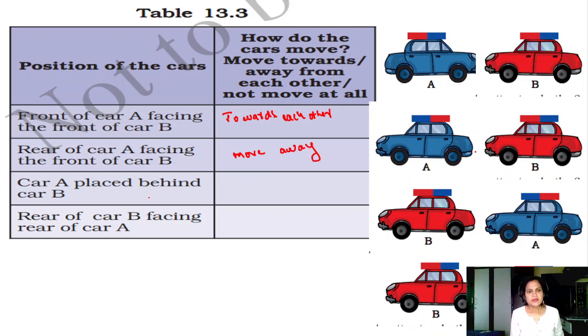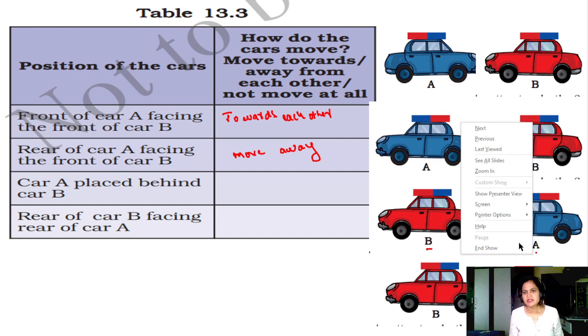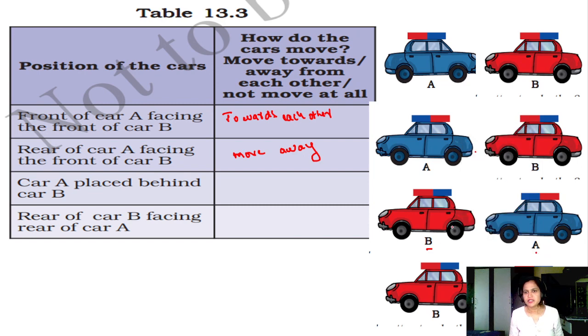Now car A is placed behind car B. This is car B. Behind that you park car A like this. A is at the front. Now these two are same poles. Then they repel each other. Move away.